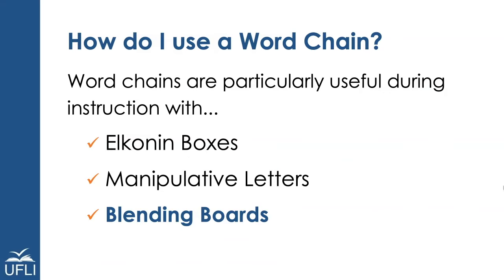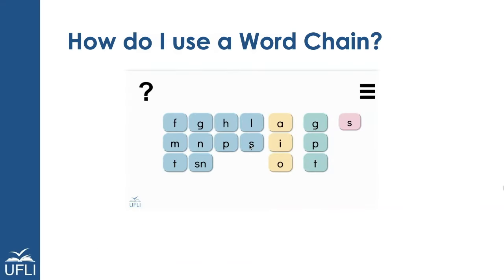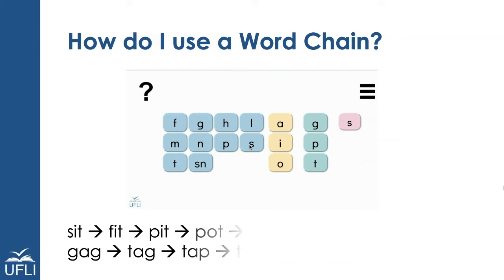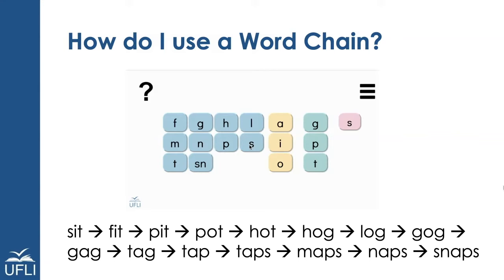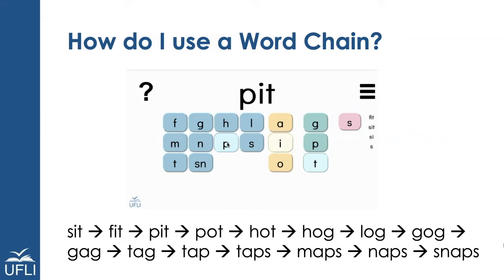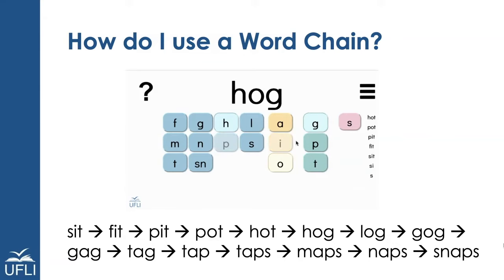Word chains can also be used with the blending boards. With the blending board we typically focus on decoding words, but we can use the same type of word chains for this word work. The teacher will select the letters and change them, and the student simply reads the words. The teacher can change the initial sound, the final sound, or even the medial sound. Some of the words are even nonsense words.